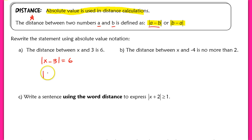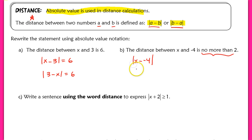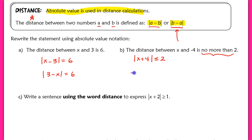We can also write that as the absolute value of 3 minus x equals 6. For part b, 'the distance between x and negative 4 is no more than 2' — we set up x minus negative 4, which is x plus 4, so the absolute value of x plus 4. 'No more than 2' means less than or equal to 2, so the absolute value of x plus 4 is less than or equal to 2. Equivalently, we could write the absolute value of negative 4 minus x is less than or equal to 2.